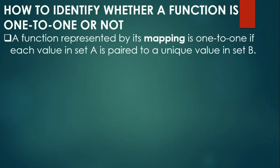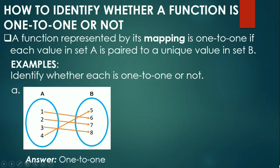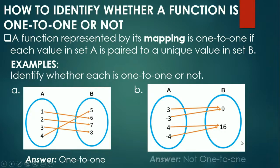For a mapping diagram, a function is one-to-one if each value in set A is paired to a unique value in set B. First example: 1 paired to 6, 2 to 7, 3 to 8, 4 to 5 — no repeats in A or B, so this is one-to-one. Second example: 3 and negative 3 are both paired to 9, and 4 and negative 4 are both paired to 16 — 9 and 16 are repeated, so this is not one-to-one.